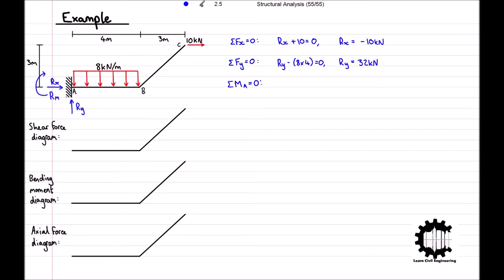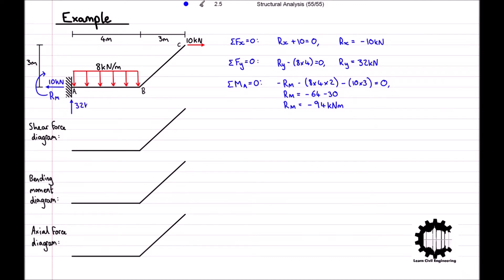Taking the anti-clockwise rotation direction to be positive, the sum of all moments relative to point A is equal to negative Rm minus 8 times 4 times 2 minus 10 times 3, which equals zero. So Rm is equal to negative 64 minus 30, which equals negative 94 kilonewton meters. At the fixed support we have a horizontal reaction force of 10 kilonewtons acting towards the left, a vertical reaction force of 32 kilonewtons acting upwards, and a reaction moment of 94 kilonewton meters acting in the anti-clockwise rotation direction.